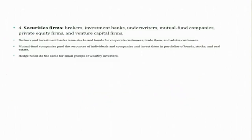Another group of financial intermediaries is securities firms, which include brokers, investment banks, underwriters, mutual fund companies, private equity firms, and venture capital firms. Brokers and investment banks issue stocks and bonds for corporate customers, trade them, and advise customers. Mutual fund companies pool the resources of individuals and companies and invest them in portfolios of bonds, stocks, and real estate. Hedge funds do the same for a small group of wealthy investors. We will discuss securities firms further in appropriate context in our course.